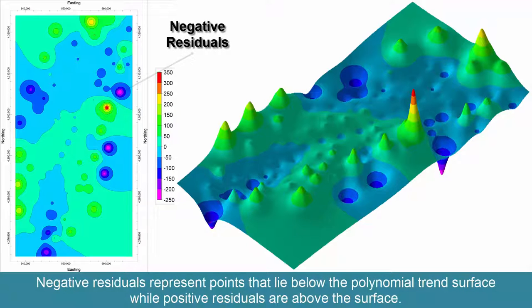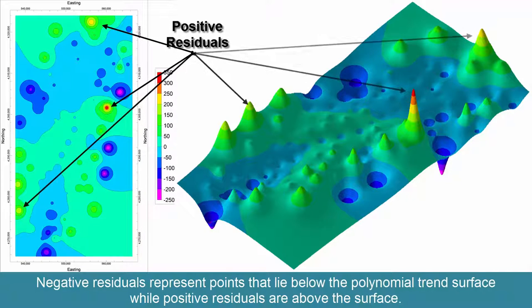Negative residuals represent points that lie below the polynomial trend surface, while positive points are above the surface.